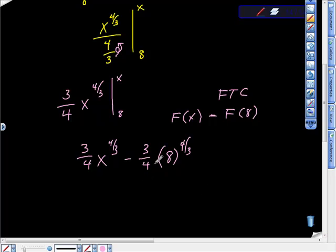If you don't mind, what I'm going to do is I'm going to factor out this 3/4. So I'm going to take my 3/4 out. Here's my 3/4, this one and this one, and leaves me with x to the four-thirds minus 8 to the four-thirds. 8 to the four-thirds is the same as cube root of 8 to the fourth power.